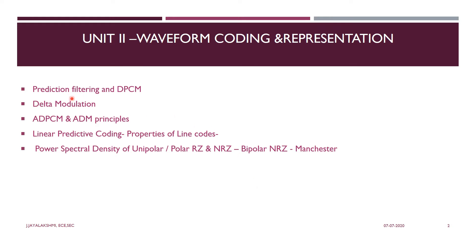The modulation techniques we are going to discuss in our second unit are differential pulse code modulation, delta modulation, adaptive delta modulation scheme, and adaptive differential pulse code modulation techniques. Apart from that, we are going to see the line coding techniques and their power spectral density for different coding techniques such as unipolar, polar, return to zero, non-return to zero, bipolar, non-return to zero, and Manchester coding techniques.